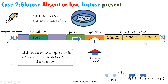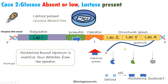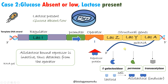Now RNA polymerase can proceed and transcribe the structural genes, forming an mRNA and producing all the proteins — beta-galactosidase, permease, and transacetylase — required for the metabolism of lactose. So in the presence of lactose and absence of glucose, lac operon is turned on to utilize the alternative nutrient source. Allolactose functions as an inducer by binding to the repressor protein and making it inactive. That is why lac operon is called an inducible operon.